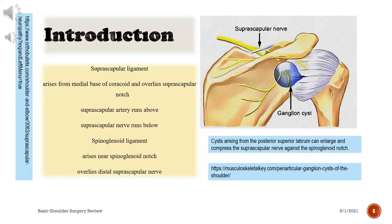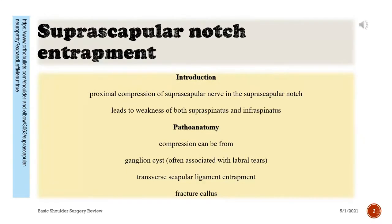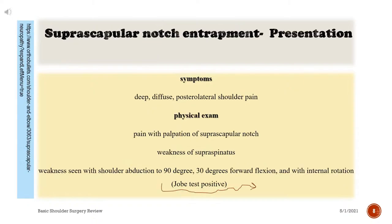Cysts arising from the posterior superior labrum can enlarge and compress the suprascapular nerve against the spinoglenoid notch. Suprascapular notch entrapment involves proximal compression of the suprascapular nerve, leading to weakness of both supraspinatus and infraspinatus. Compression can be from a ganglion cyst often associated with labral tears, transverse scapular ligament entrapment, or fracture callus.